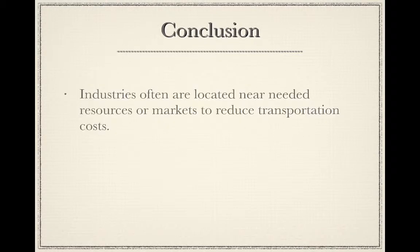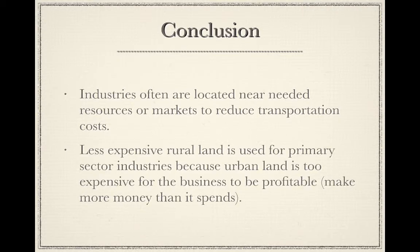In conclusion, industries often are located near needed resources or markets to reduce transportation costs. Less expensive rural land is used for primary sector industries because urban land is too expensive for the business to be profitable — that is, to make more money than it spends, as the rents and cost of being there would be too high.